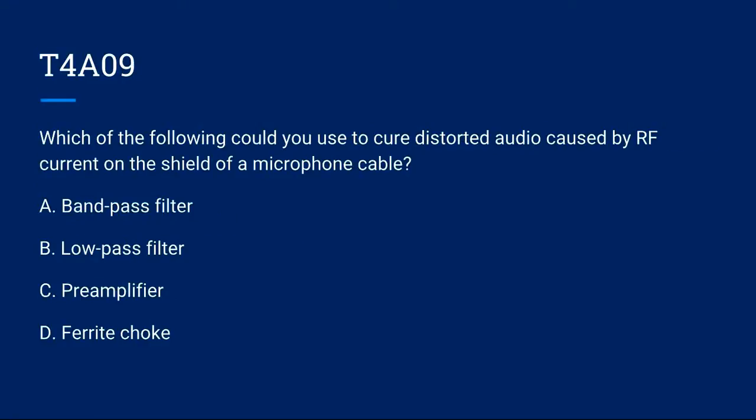T4A-09: Which of the following could you use to cure distorted audio caused by RF current on the shield of a microphone cable? A. Band pass filter. B. Low pass filter. C. Pre-amplifier. Or D. Ferrite choke. Correct answer is D. Ferrite choke.